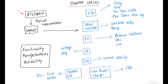We then go through the physical implementation flow, which involves a variety of steps discussed in previous videos, like floor plan, placement, clock resynthesis, routing, etc. And finally, we get the layout which is manufacturing ready.